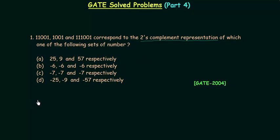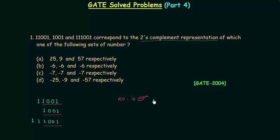The three 2's complement representations are 11001, 1001, and 111001. Comparing them, we can see that 1001 is common. In 2's complement representation, a number is negative if the MSB — the most significant bit, also called the sign bit — is equal to 1. In all three cases the MSB is 1, so the decimal numbers are negative. Option A is incorrect, leaving options B, C, and D.